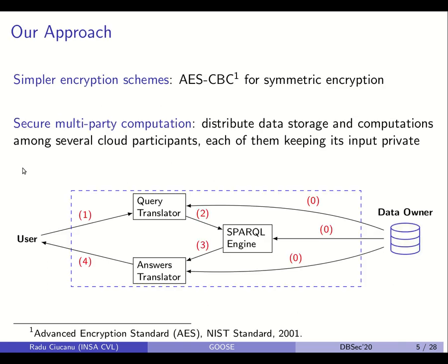Instead, our approach is to rely on simpler encryption schemes without fully homomorphic properties, like AES-CBC for symmetric encryption, and to use secure multiparty computation — distributing data storage and computations among several cloud participants. Each of them keeps its input private, but they jointly compute the result of the query on the graph. The data owner externalizes data storage to three different cloud nodes. The user submits the query to one of these nodes, the nodes exchange messages, and the user receives the query answer from another cloud node.